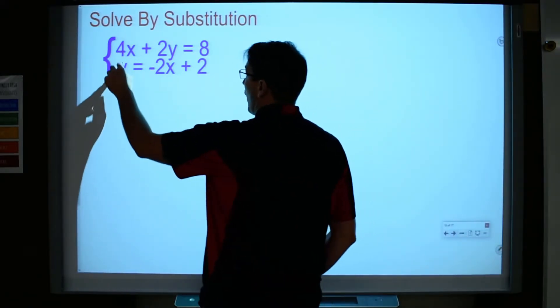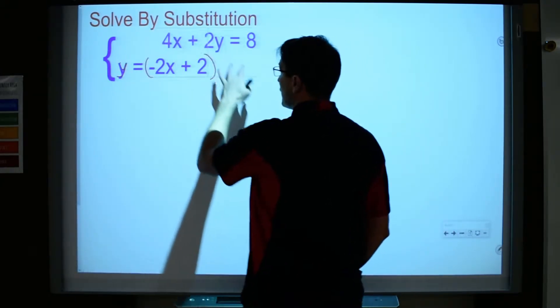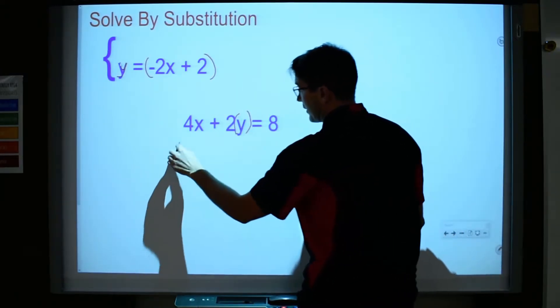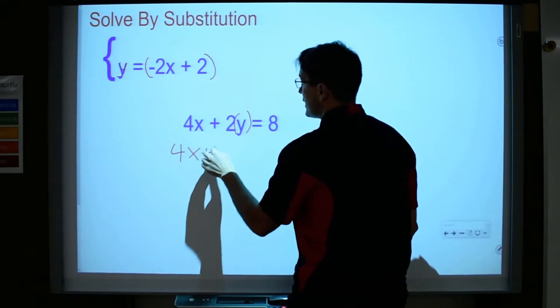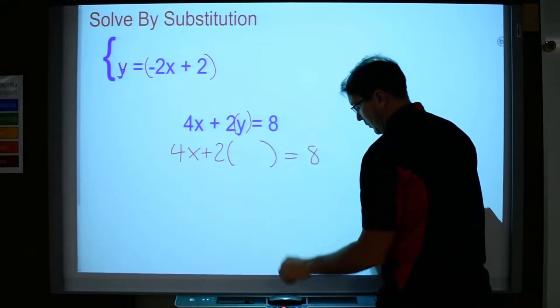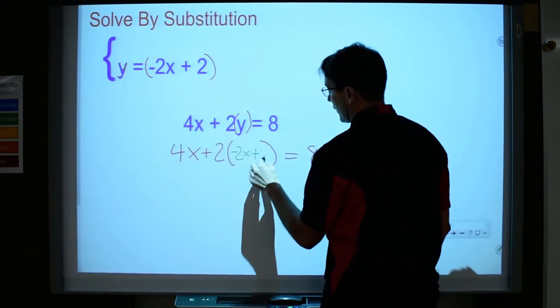I'm hoping you paused and tried this. If you did, you would say okay, y is alone on the bottom, so I'm going to substitute the y value into the equation above because I'm looking for the one that's alone. So here's my y, I want to get that alone, so I'm going to write 4x plus 2 parentheses equals 8. And what is my y equals? It equals negative 2x plus 2.